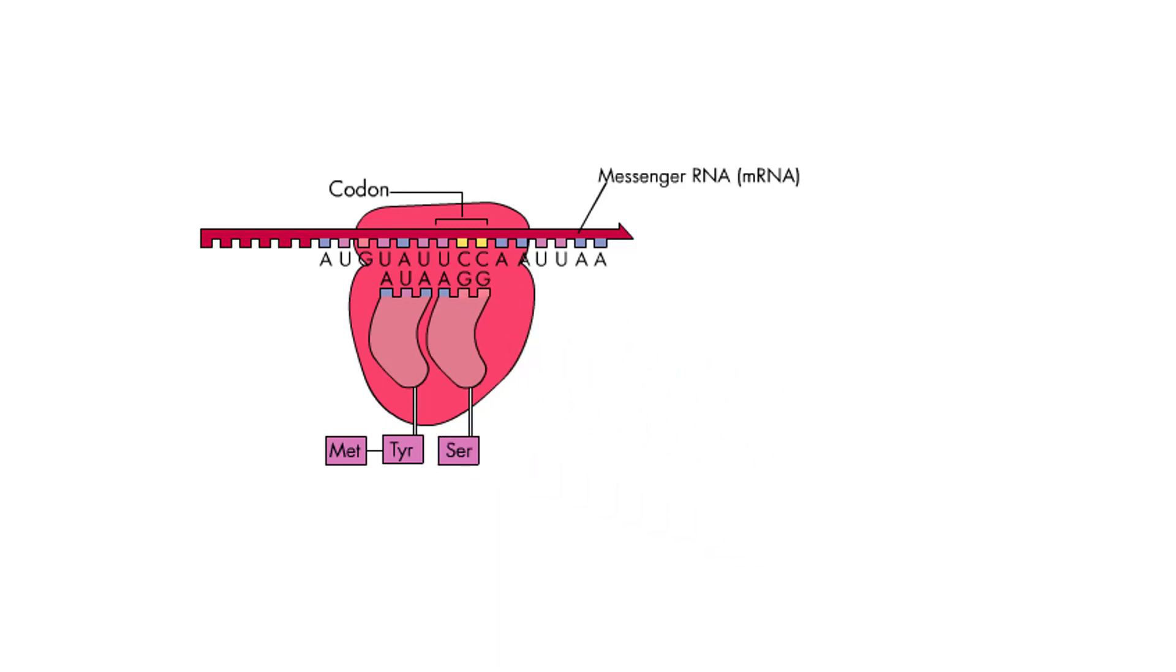The shift creates space for the third tRNA, which in this example carries the amino acid serine to diffuse in and bind to the third codon in the mRNA. A peptide bond then joins serine to tyrosine, forming a chain of three amino acids.